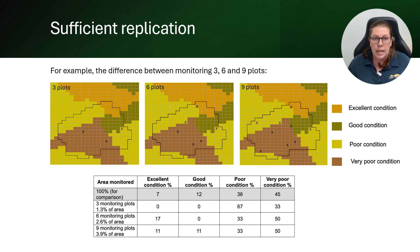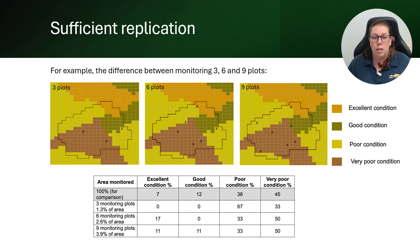Looking at the table at the bottom of the diagram: with three monitoring plots, the score was zero for excellent condition and zero for good condition, which isn't the case. It also gave 67 percent for poor condition land, which is far away from the 36 percent we know is there. With nine monitoring plots, excellent and good condition are both represented and those proportions are relatively close to what's actually there, as are the figures for poor and very poor condition. So we can see that the number of monitoring plots really matters — if we have too few, we have very little confidence in what they're telling us about the whole site.